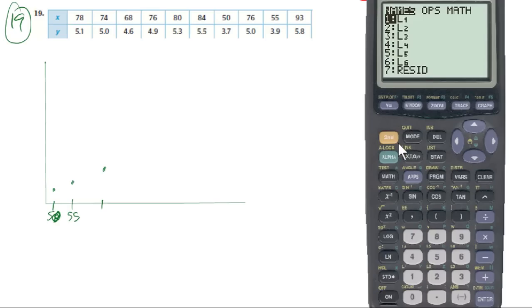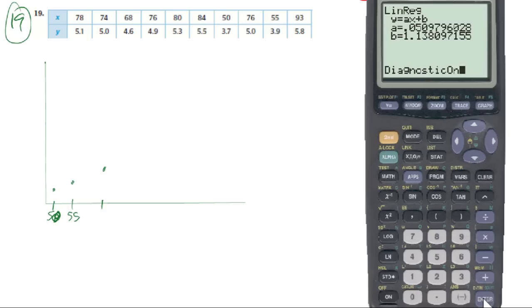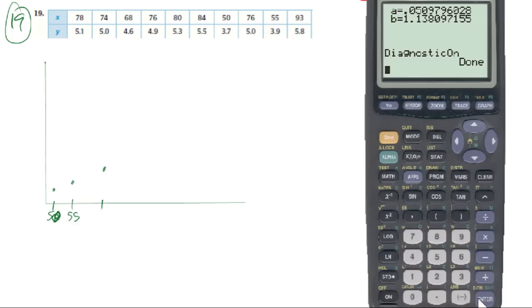Okay, so if we want to turn it on so that it tells us what r is, we're going to go second. Then to zero, where above zero is actually what we're using as catalog. And we want to go down to the d's. So right here you'll see a green d. It's already looking for a letter to be input. So d goes down to the d's. We're going to go down to diagnostic on. And now it's waiting for us to tell it to turn the diagnostic on. We have to hit enter, so we've done that.